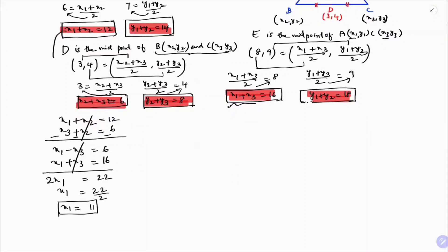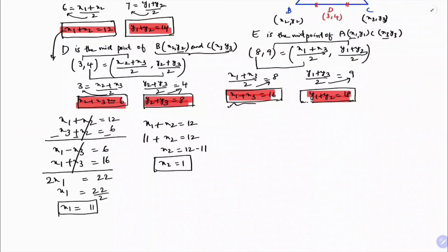Using the first equation, x1 plus x2 equals 12: substituting x1 equals 11 gives 11 plus x2 equals 12, so x2 equals 1. Then using x1 plus x3 equals 16: 11 plus x3 equals 16, so x3 equals 5.